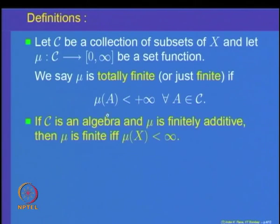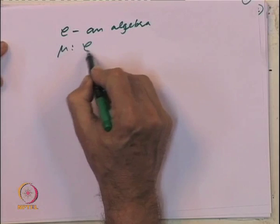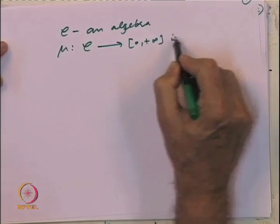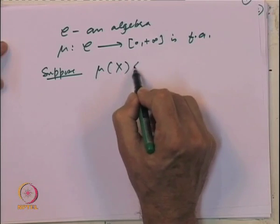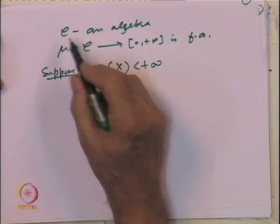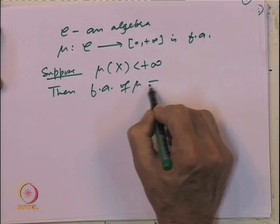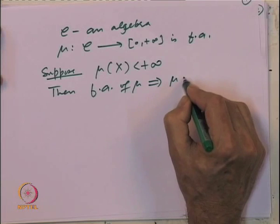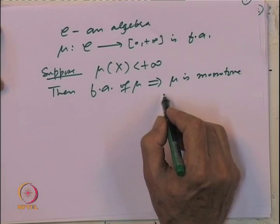Note that in case C is an algebra and mu is finitely additive, then mu is finite if and only if mu(X) is finite. To see that, let us assume that C is an algebra and mu from C to [0, +infinity] is finitely additive. Suppose mu of the whole space is finite. Note the whole space X belongs to C because C is an algebra. Then finite additivity of mu implies mu is monotone. We had seen this property earlier and will not go into the details again.